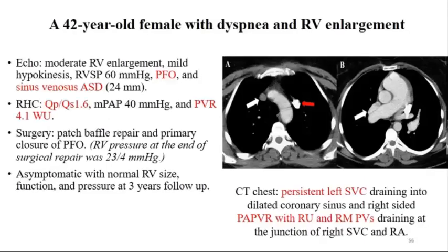Scenario 2: borderline case with PVRi between 2.3 and 4.6. A patient had PH with right and left-sided superior vena cava, partial anomalous pulmonary venous repair, PFO, and ASD. Her PVR was 4.1. The decision was made to proceed with surgery. She did well—RV pressure went down to 23/4 by end of surgery and she remained asymptomatic at three years.